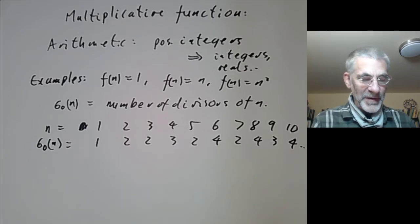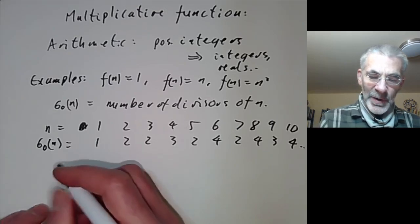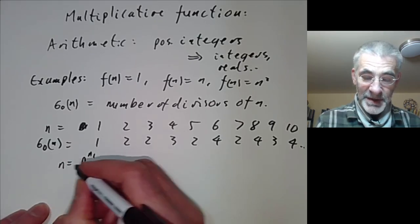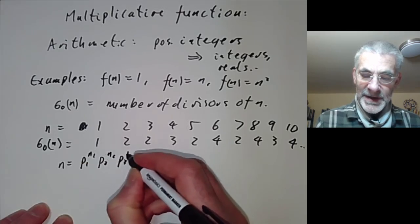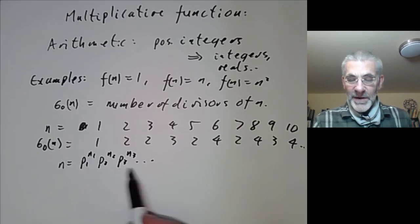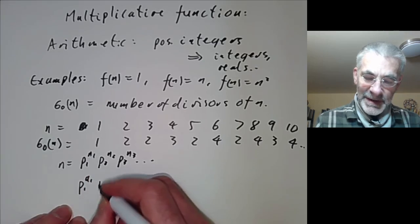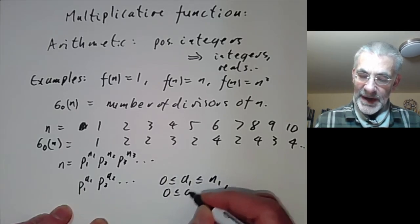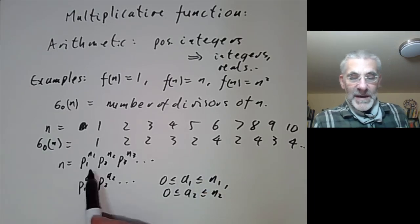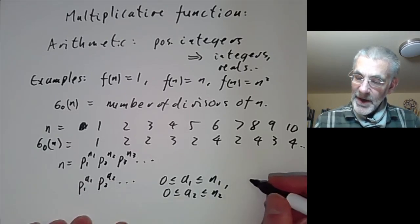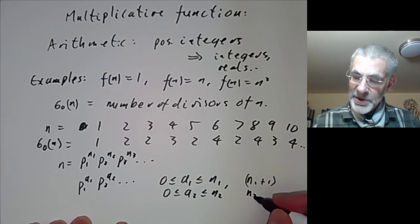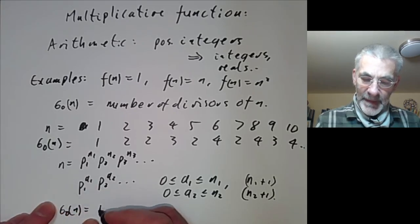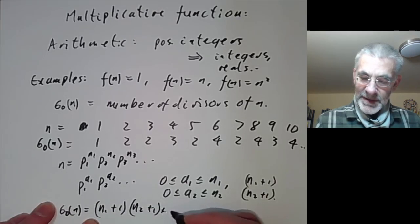It doesn't look like a very smooth function if you draw a graph of it. To find a formula, we write n as a product of primes using the fundamental theorem of arithmetic: n = p1^n1 * p2^n2 * p3^n3 and so on. The divisors are of the form p1^a1 * p2^a2 * ... with 0 ≤ a_i ≤ n_i. There are (n1+1) choices for a1, (n2+1) choices for a2, and so on. So sigma_0(n) = (n1+1)(n2+1)···.